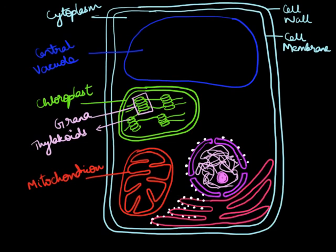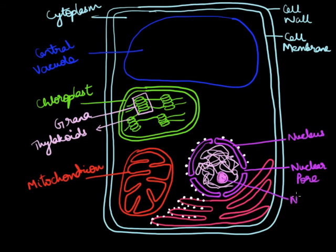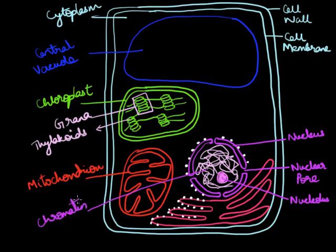We have drawn ribosomes outside the nucleus and also on some parts of the endoplasmic reticulum. Let us label these parts: this is the nucleus, this is the nuclear pore, this is the nucleolus, and the squiggly line is the chromatin material. This part is the rough endoplasmic reticulum and this part is the smooth endoplasmic reticulum.